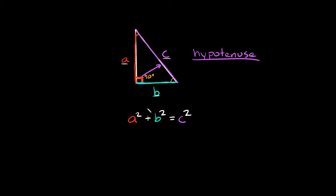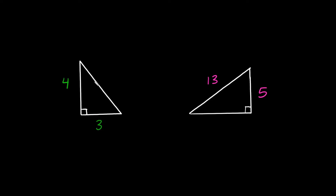Let's do a couple examples. Starting with this example right here — the first thing I want you to know how to do is identify the hypotenuse. So what side is the hypotenuse here? It would be this side right here, because it's not touching the right angle, or it is opposite of the right angle. Since we know this is the hypotenuse, we're going to label this side as C.